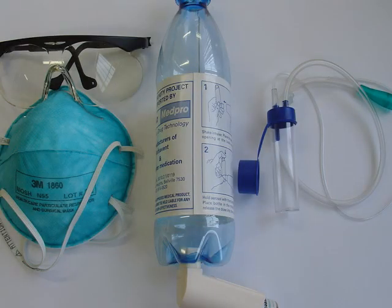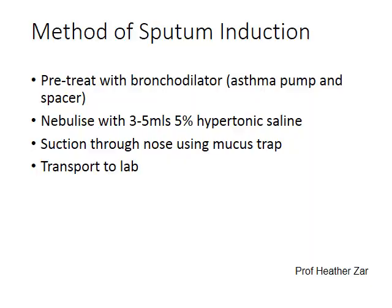A quick note on sputum induction: if gastric aspirates are not possible, sputum induction should be accessible at every primary healthcare clinic. Very importantly, children can develop quite bad wheezing when nebulized with hypertonic saline. It is therefore important to pre-treat the child with a bronchodilator using an asthma pump and a spacer — which can be made from a water bottle. Then nebulize the child with 3 to 5 mls of 5% hypertonic saline, which will make the child cough. After that, use suction through the nose with a mucus trap and transport the sample to the labs for investigations.